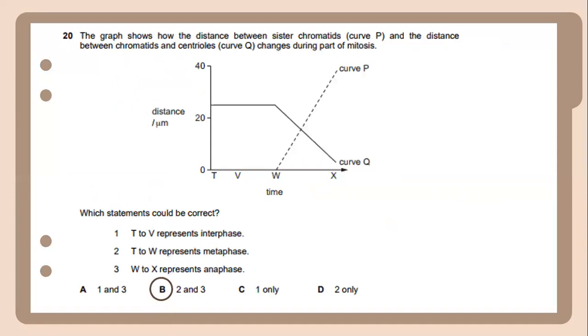Number 20. The graph shows how the distance between sister chromatids, which is curve P, and the distance between homologous centromeres, curve Q, changes during part of mitosis. Which statement could be correct? The correct answer is T to W represents anaphase, and W to X represents anaphase. So the correct answer is 2 and 3.